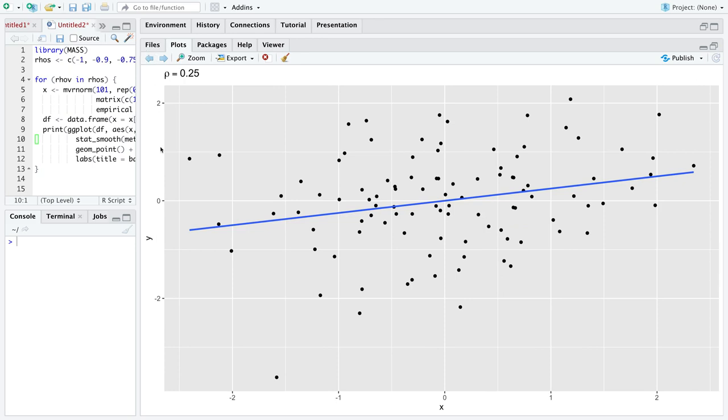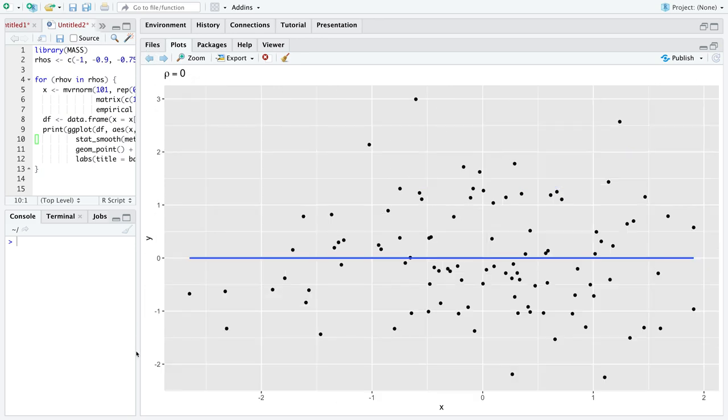And eventually at rho equal to 0, what we see is the simple linear regression line is essentially flat because there's no relationship between x and y. As x changes, y does not change in an obvious linear way. There is zero relationship, zero correlation between x and y.